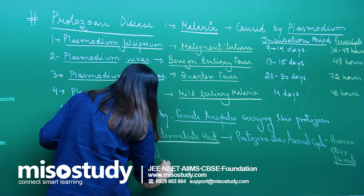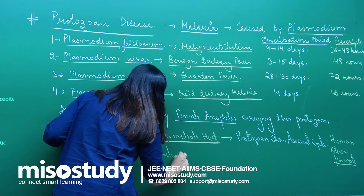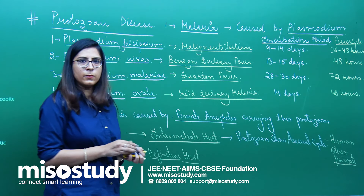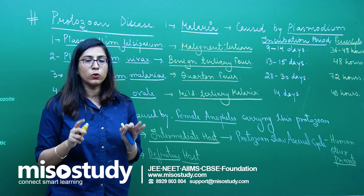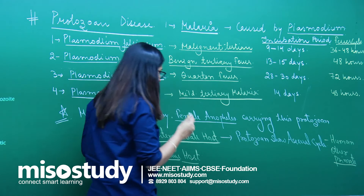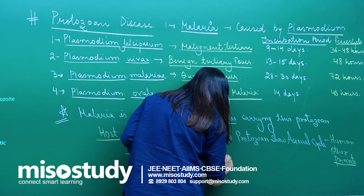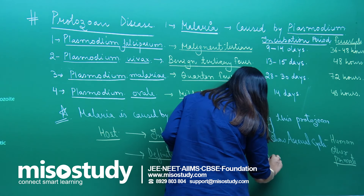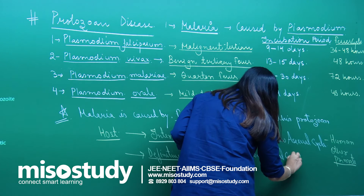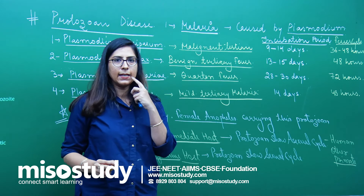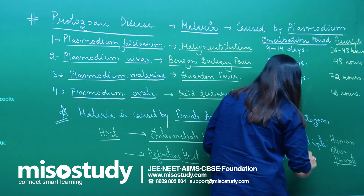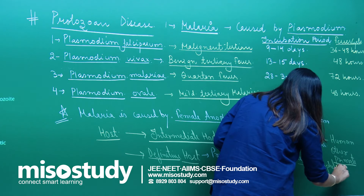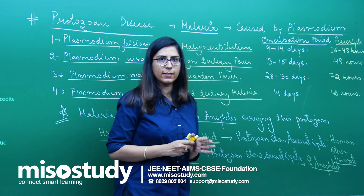The second type of host is termed the definitive host. The definitive host is that host in which this protozoan completes its sexual cycle. And what is that host? That is the female Anopheles.